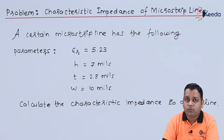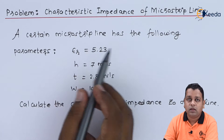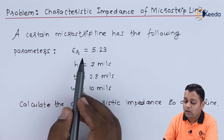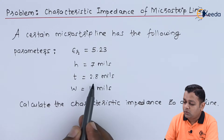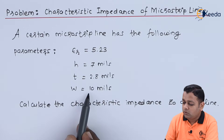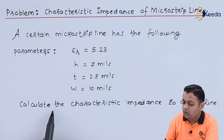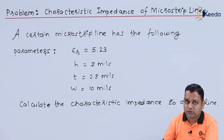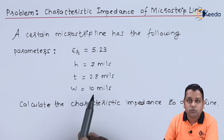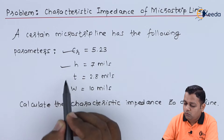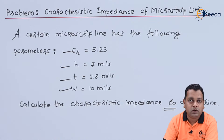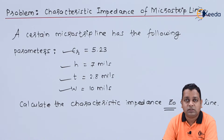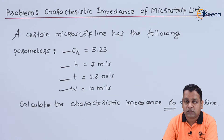The problem statement provides a micro strip line with the following parameters: epsilon_r = 5.23, h = 7 mils, t = 2.8 mils, and w = 10 mils. We are asked to determine the characteristic impedance Z0 for this given transmission line. This is straightforward — four values are given and only one parameter, Z0, is to be determined. Z0 is essential for maximum power transfer over a transmission line.